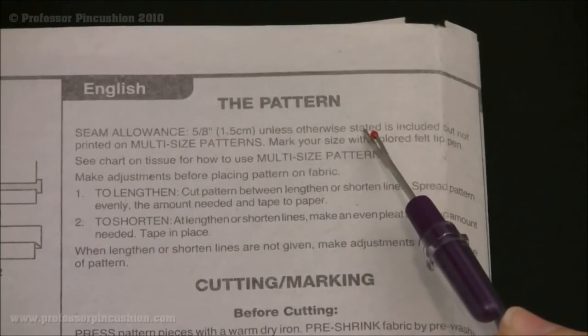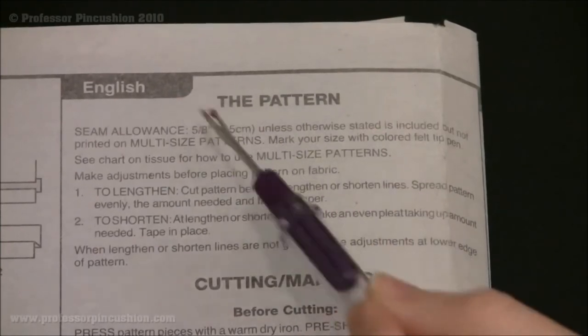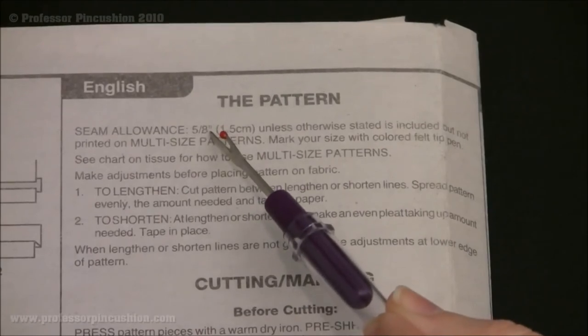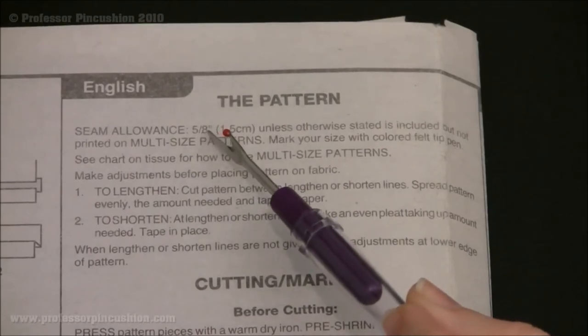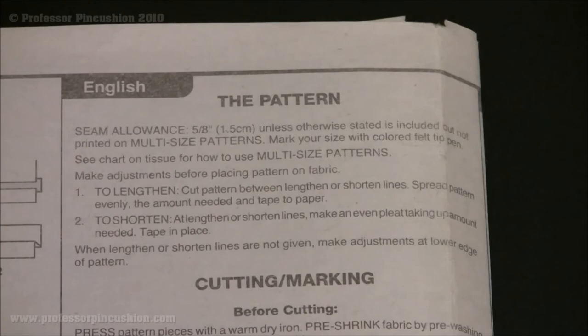So that means that your seam allowance for this pattern piece is five-eighths of an inch. This is common for most patterns. Usually five-eighths of an inch is your normal seam allowance.